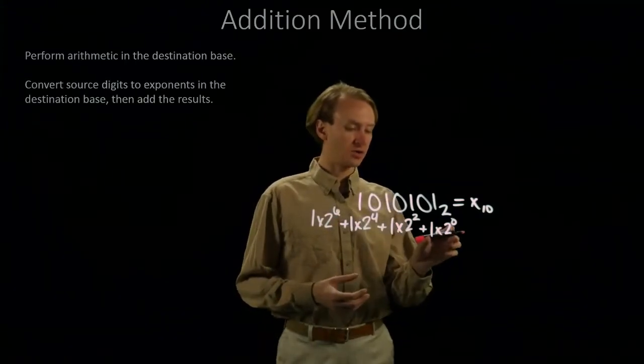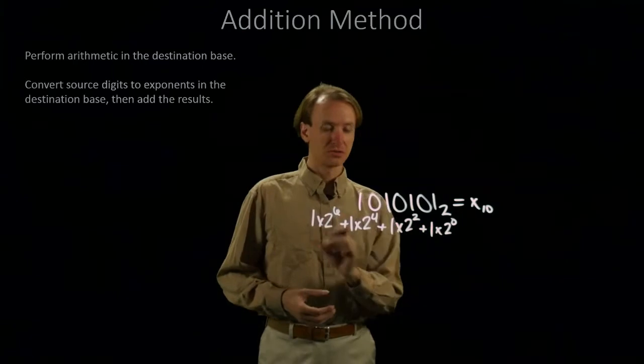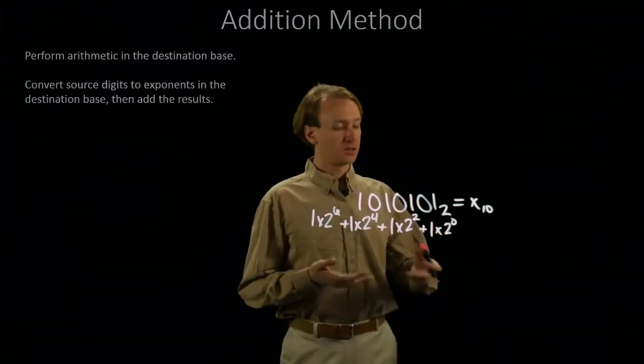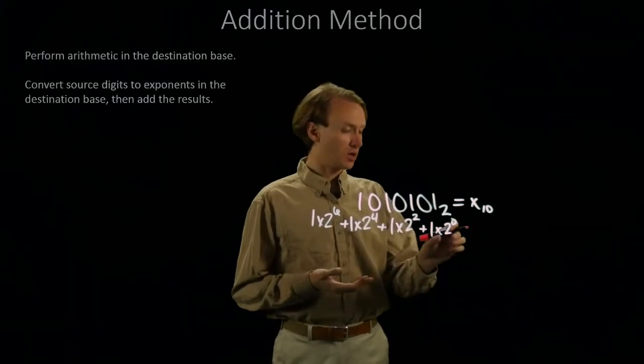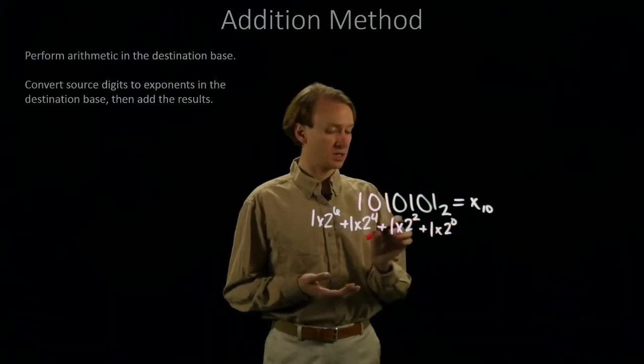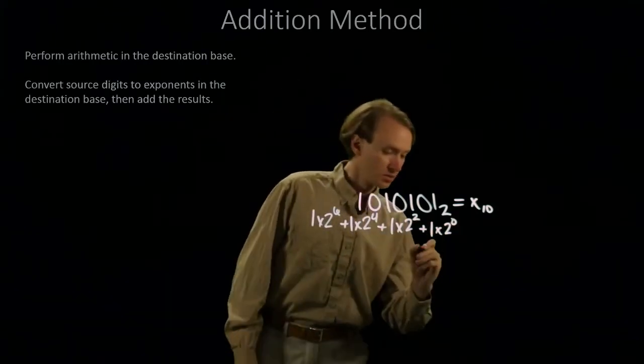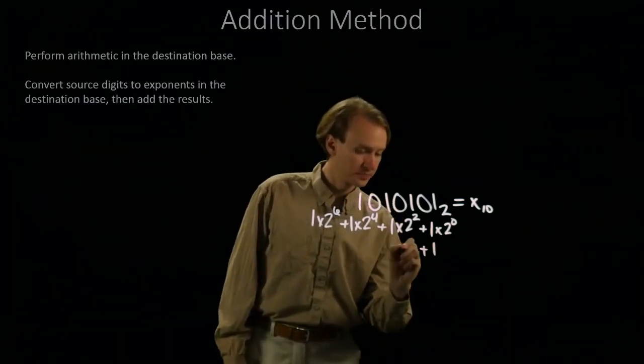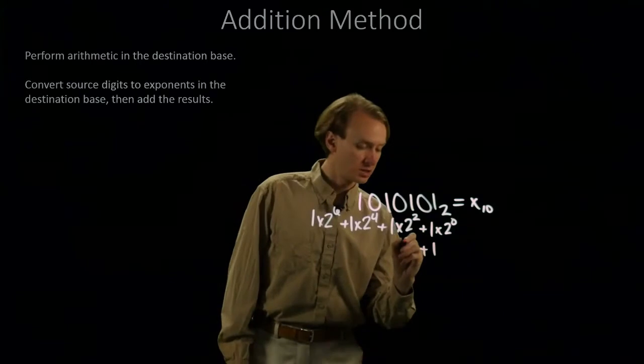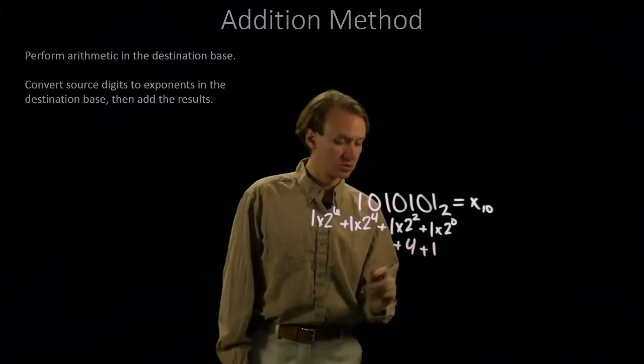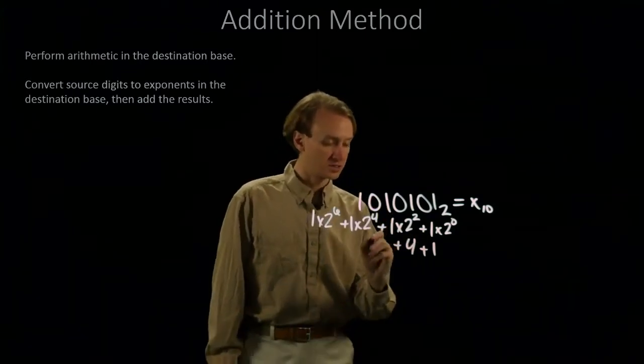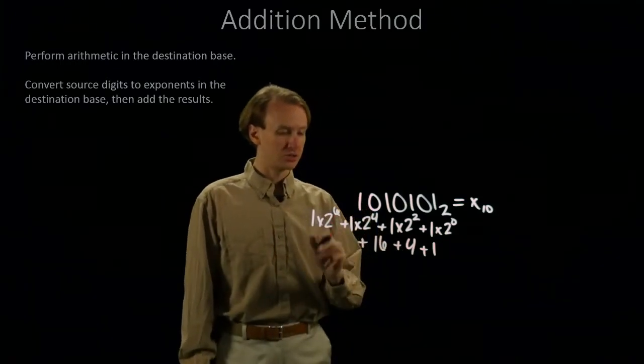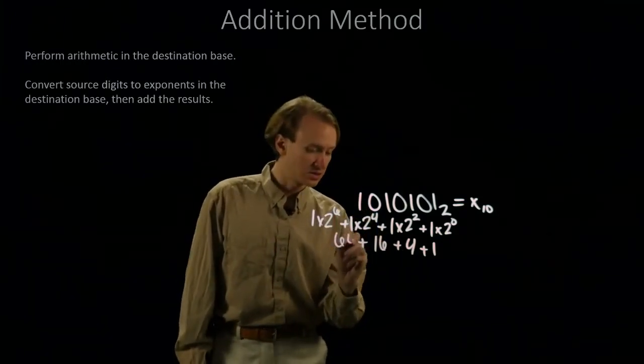In this case all I have are coefficients of 1. Since it's binary all I'm going to have are 1's and 0's anyway. This makes this really nice because now all I really care about are these exponents here. So 2 to the 0 is 1, 2 squared is 4, 2 to the 4th is 16, and 2 to the 6th is 64.